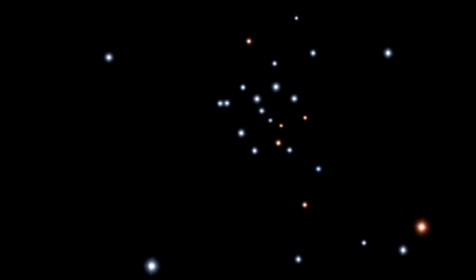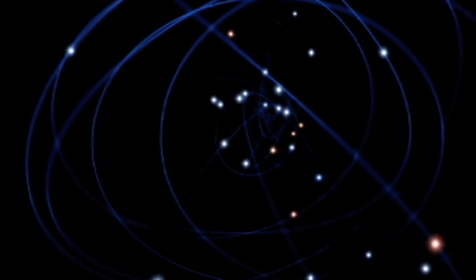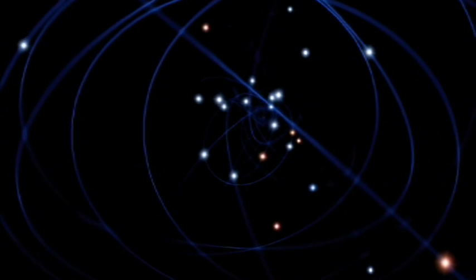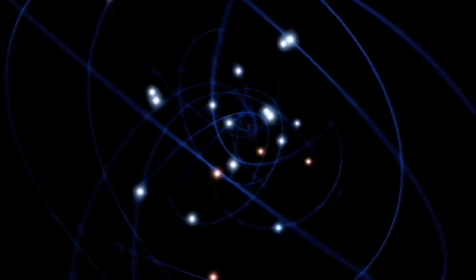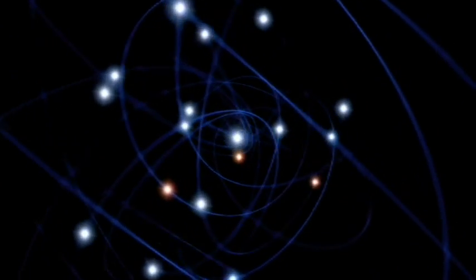So what this team did was that at various points of the past 16 years, they kept taking images of the very central region of the Milky Way. Now from these images, they were able to map out the motions of a total of 28 stars. Now what these motions showed was that these stars aren't just moving about randomly, but that they are clearly orbiting a very massive central object. And the point is that this central object is completely unseen.